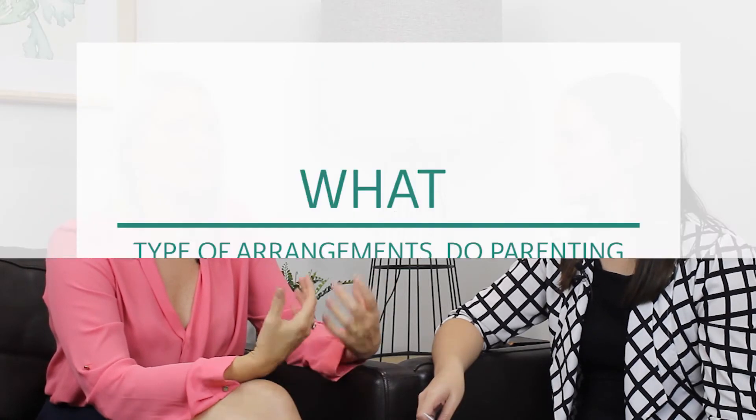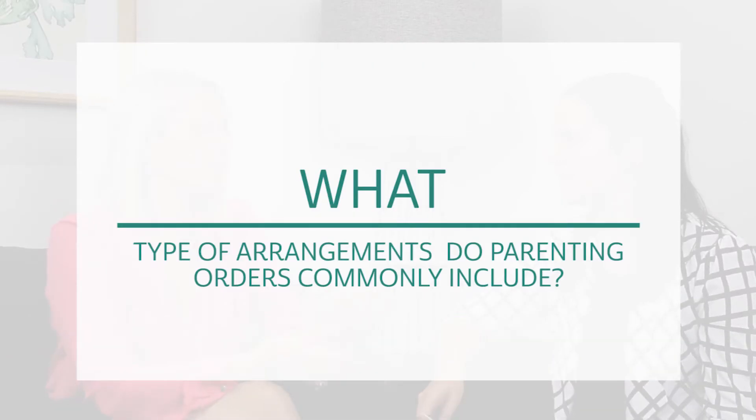So what are the different types of arrangements that people put into their parenting orders? Generally, the orders detail whether one parent will have what we call sole parental responsibility, or whether both parents will have shared parental responsibility — and that relates to decision-making for the children. The big decisions like education, health, religion, and those sorts of things.